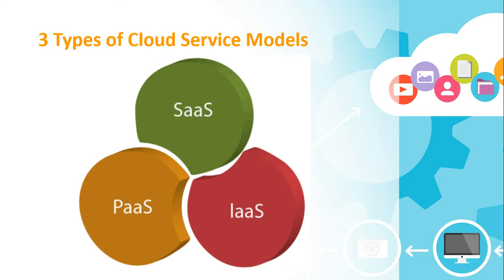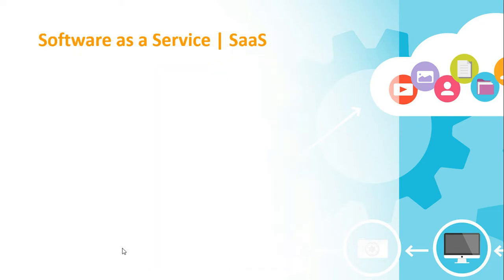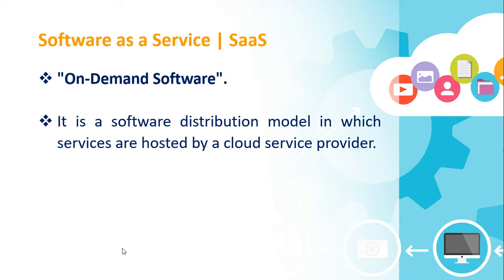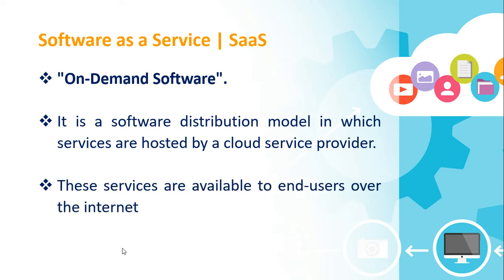Good day everyone. In this video, I will be discussing the last type of cloud service models, or the third layer of cloud computing, which is SaaS, also known as Software as a Service. Software as a Service is also known as on-demand software. It is a software distribution model in which services are hosted by a cloud service provider and are available to end-users over the internet.